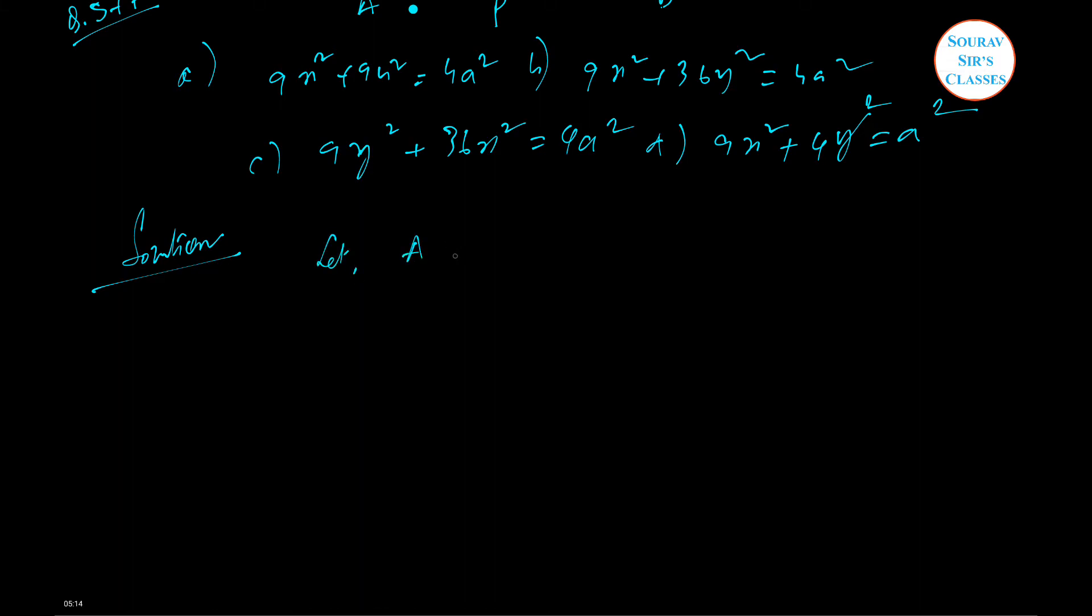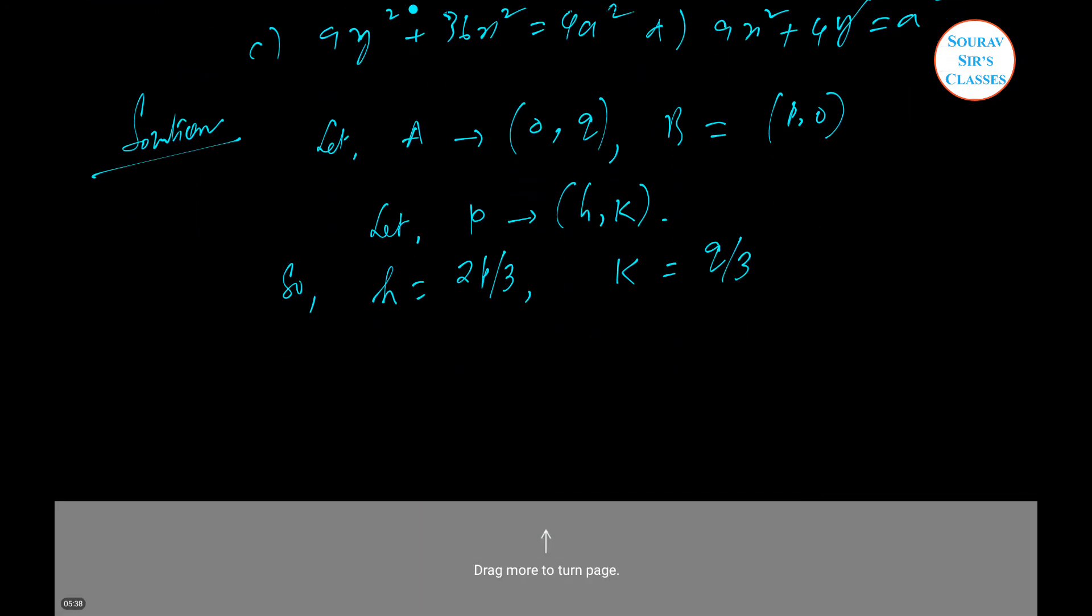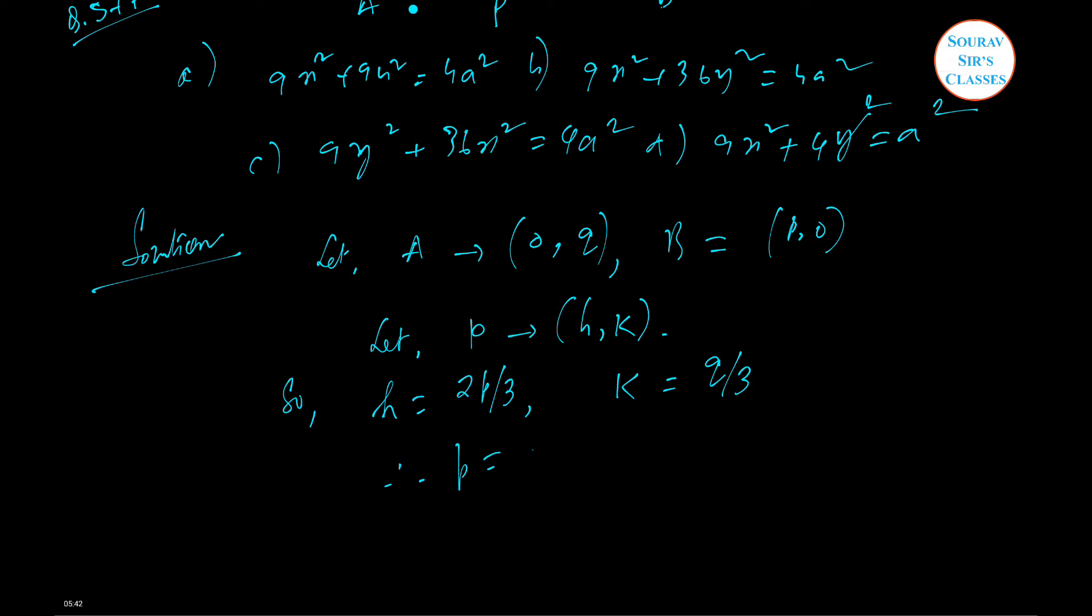Let's see what happens in the solution. Let A is 0 comma Q and B is P comma 0 and let this particular point P equal to H, K. We can write H equal to 2P divided by 3 and K equal to Q divided by 3. From this P we can get it as 3H by 2 and Q as 3K. So we can say that P square plus Q square equal to A square.